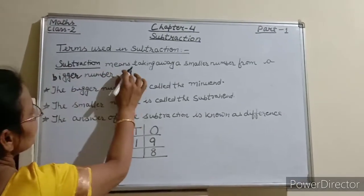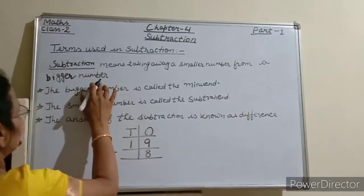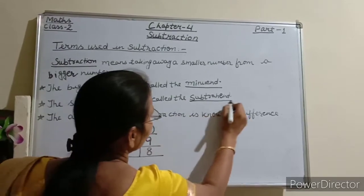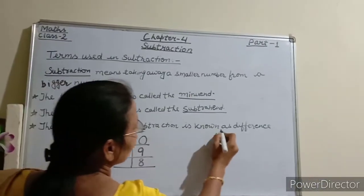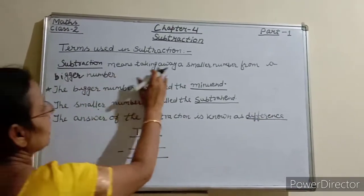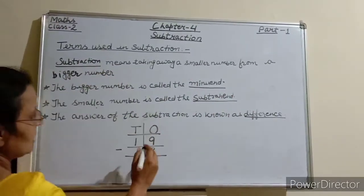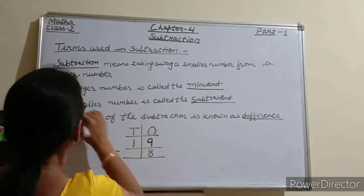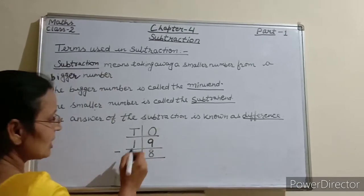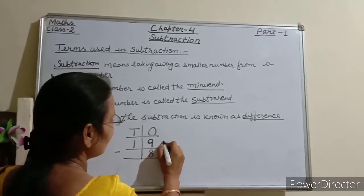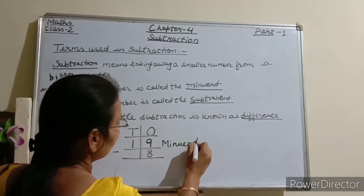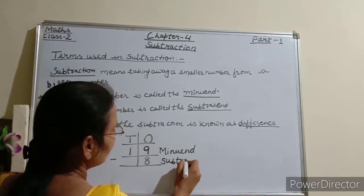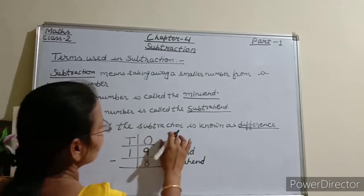Subtraction means taking away a smaller number from a bigger number. For example, subtract 8 from 19. The bigger number 19 is called the minuend, and the smaller number 8 is called the subtrahend. The answer of the subtraction is known as the difference.